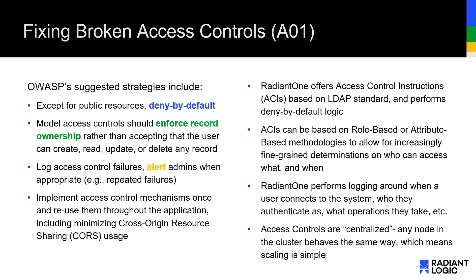OWASP's points on broken access controls are to use good access management hygiene. What Radiant One can help do here is foster appropriate data security by offering robust security policies out of the gate — we deny by default. You can set up access controls to conform to industry best practices using role-based access controls or attribute-based access controls, getting incredibly granular on how someone accesses the system. We also offer robust lifecycle intelligence with our logging setup so that it can be consumed by a SIEM to determine when a user logs in and what they're doing.